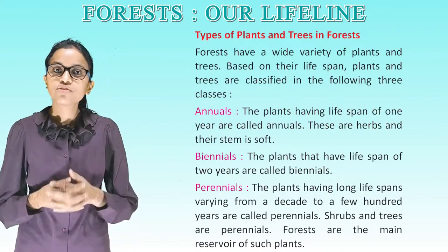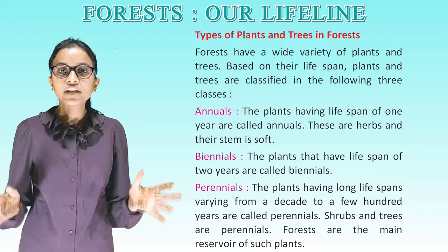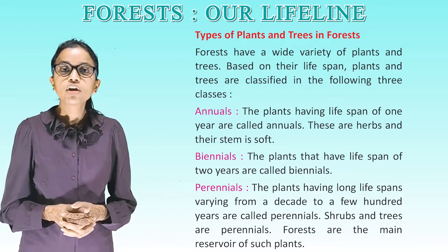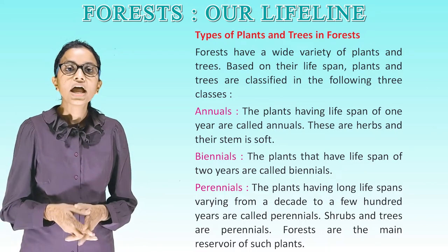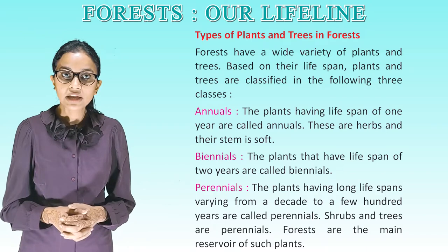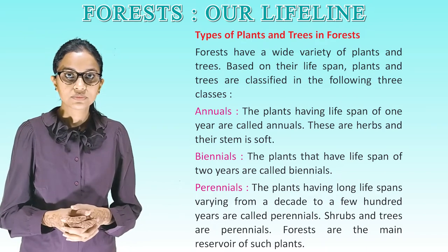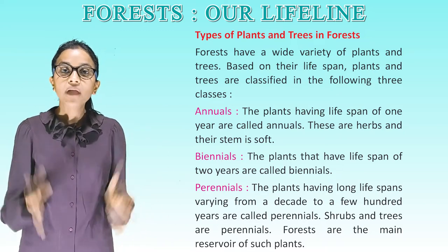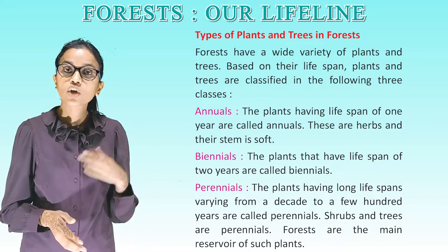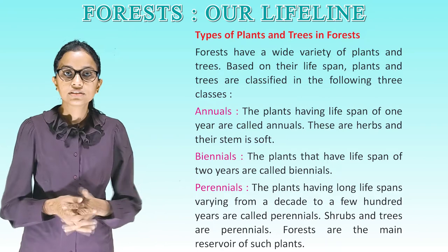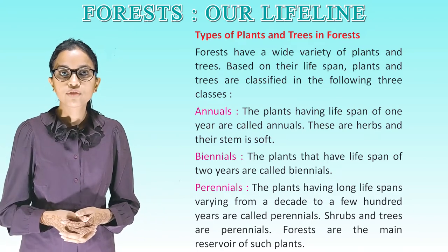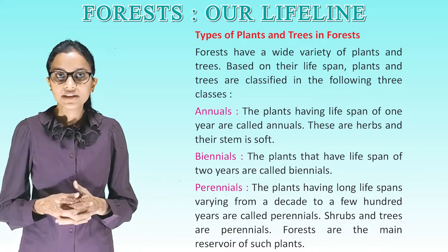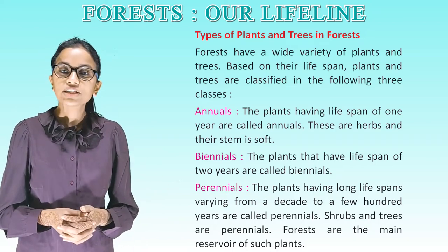Types of plants and trees in forests: Forests have a wide variety of plants and trees. Based on their lifespan, plants and trees are classified into three classes. Annuals: plants having a lifespan of one year are called annuals; these are herbs and their stem is soft. Biennials: plants that have a lifespan of two years are called biennials. Perennials: plants having a long lifespan varying from a decade to a few hundred years are called perennials. Shrubs and trees are perennials, and forests are the main reservoir of such plants.